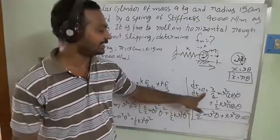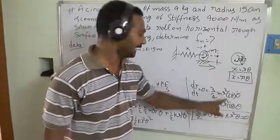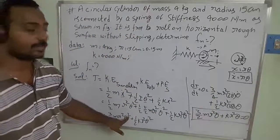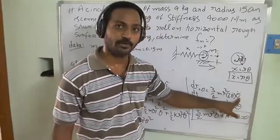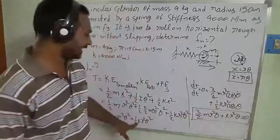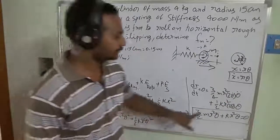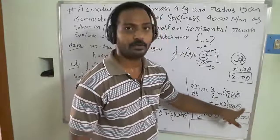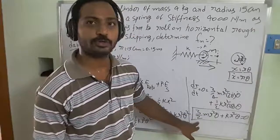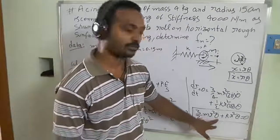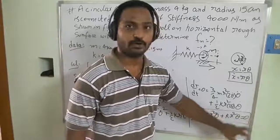Since total energy is constant, differentiating with respect to time equals zero. From this we get: three-quarters m r squared times two theta-dot times theta-double-dot, plus half k r squared times two theta times theta-dot equals zero. After further simplification, we obtain the equation of motion: three-halves m r squared times angular acceleration plus k r squared times angular displacement equals zero.